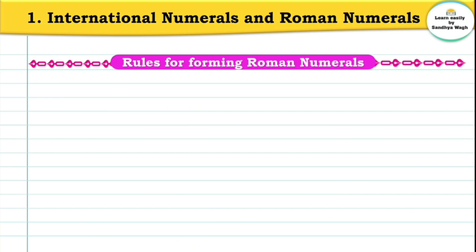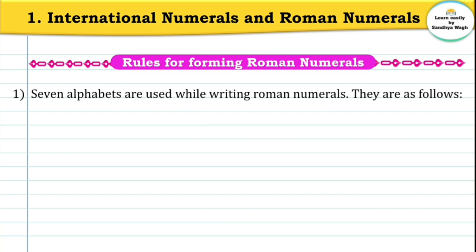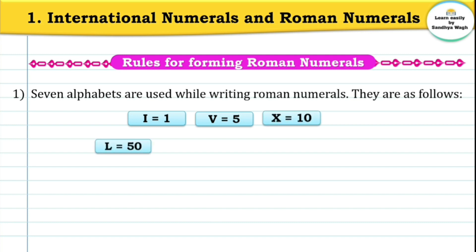Now let us learn the rules for forming Roman numerals. Rule number 1: seven alphabets are used while writing Roman numerals. They are as follows: I means number 1, V means number 5, X means number 10, L means number 50, C means 100, D means 500, and M means 1000.